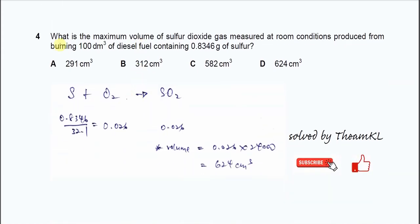Question 4: What is the maximum volume of sulfur dioxide gas measured at room condition produced from burning 100 dm³ of diesel fuel containing 0.8346 grams of sulfur? Basically the 100 dm³ is not really useful. What you need to use is the grams of sulfur.